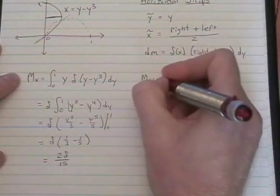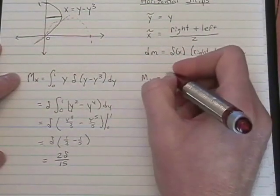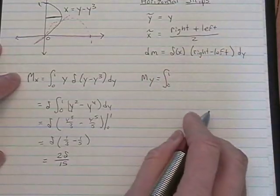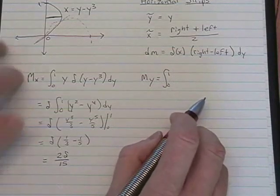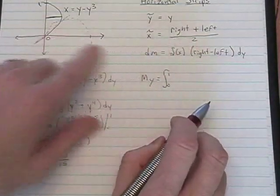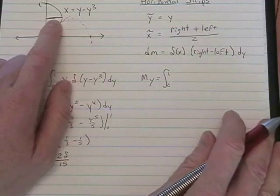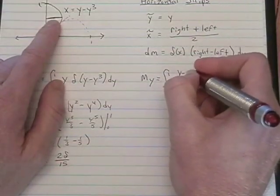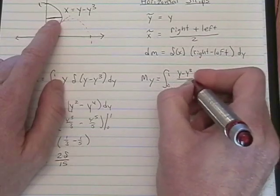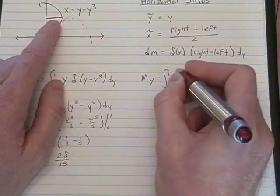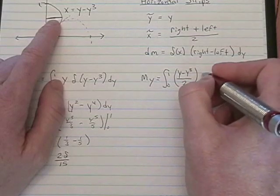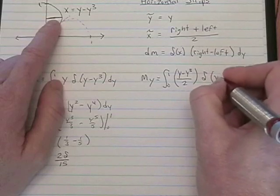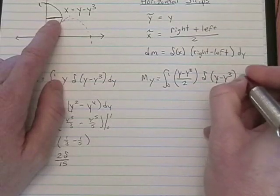For the moment about the y-axis, it's tilde x, right plus left over 2. We're going to find the center of the strip. And in our case, that's just y minus y cubed over 2. And then dm is delta times y minus y cubed dy.